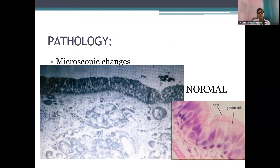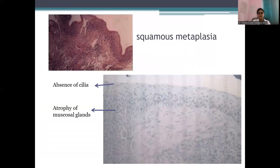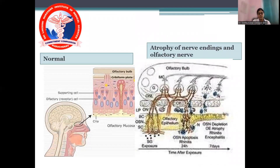The microscopic pathological changes in atrophic rhinitis include destroyed or absent cilia, decreased goblet cells, and endarteritis. There is squamous metaplasia — the normal pseudostratified ciliated columnar epithelium of the respiratory mucosa is changed into squamous epithelium because of atrophic rhinitis.